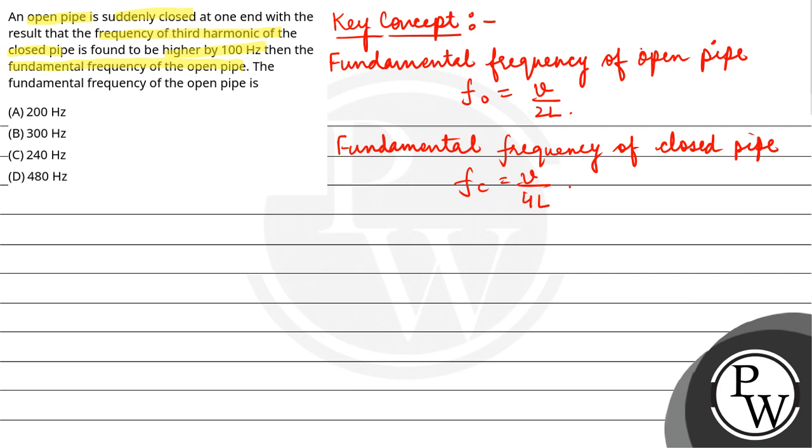You are given that the open pipe is closed at one end, and as a result the third harmonic is 100 Hertz higher.